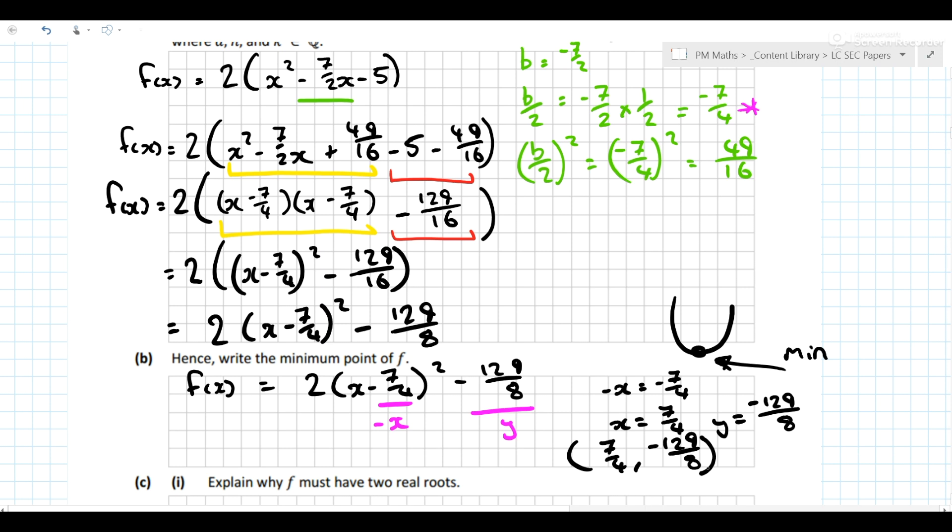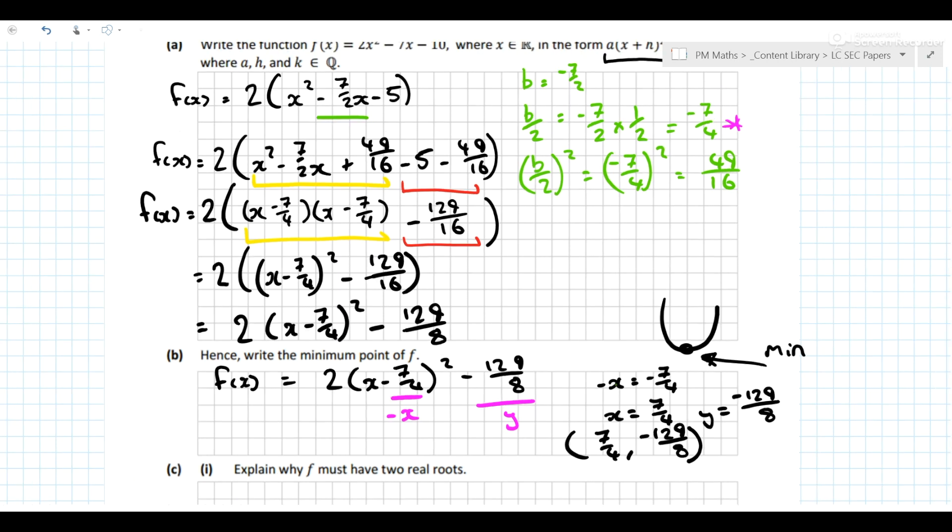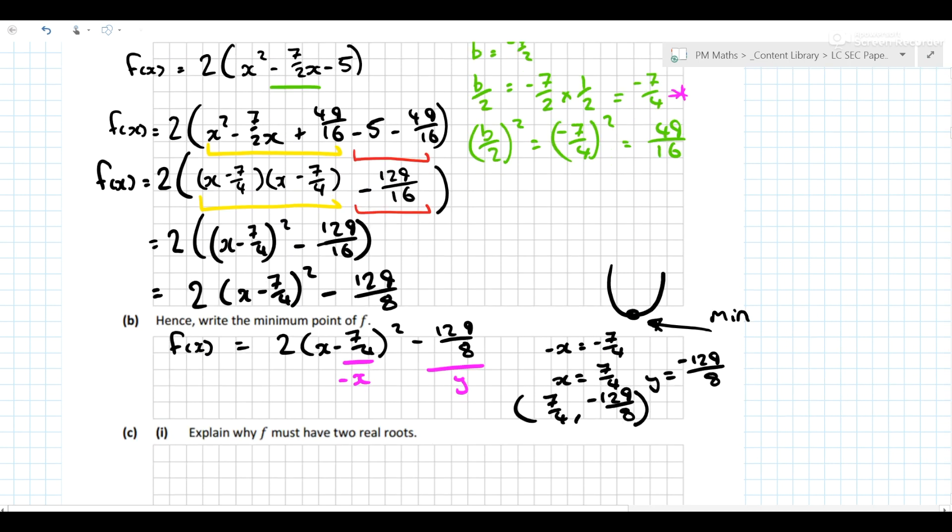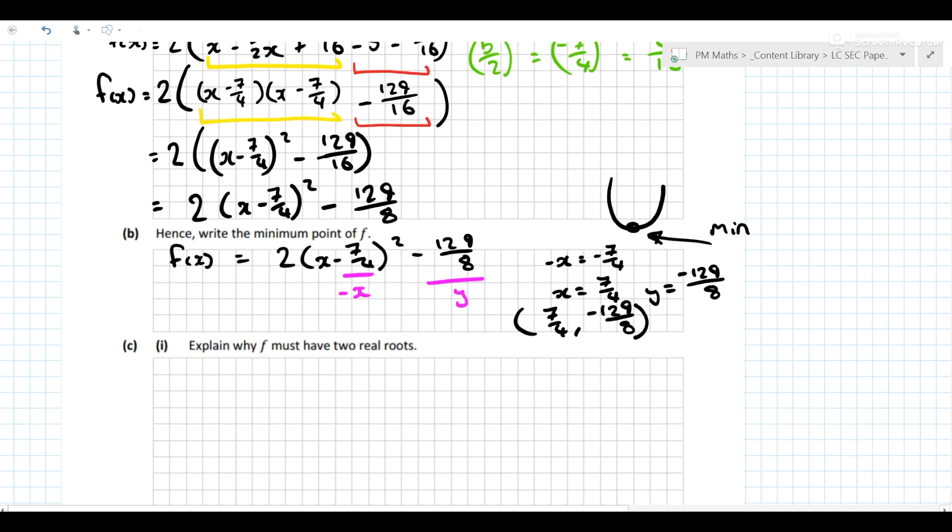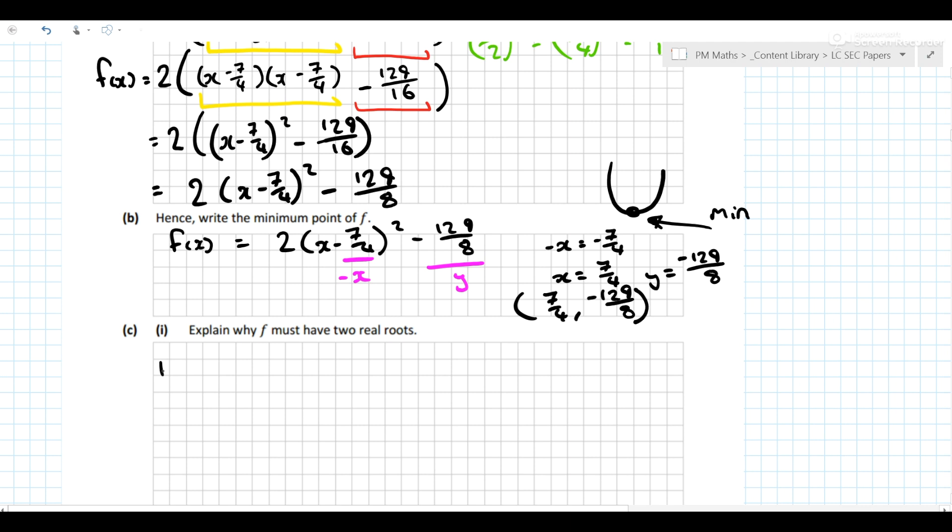So looking at it quite nicely so far, the question has been pretty nice. The rest of the question: why must it have two roots? Well, it's a positive quadratic looking like that. Well what are roots? The roots are where it crosses the x-axis. Why must it have two sections where it crosses the x-axis?